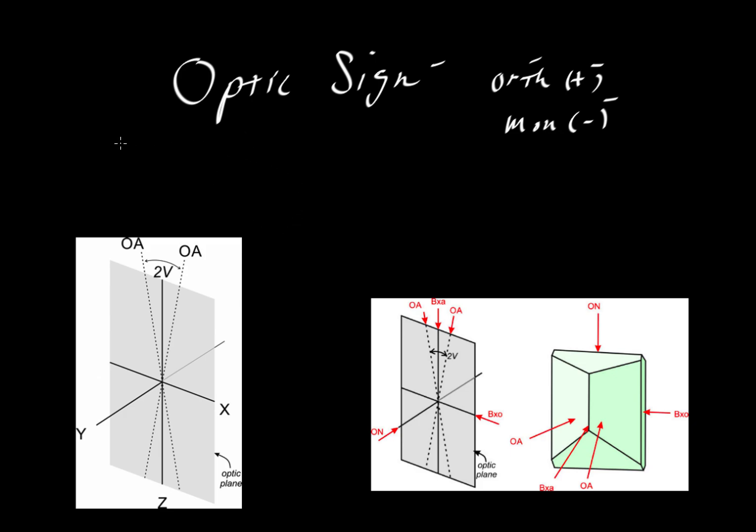There are two ways of defining it. The first involves uniaxial minerals. For uniaxial minerals, remember, we only have two principal values for the index of refraction: epsilon and omega.